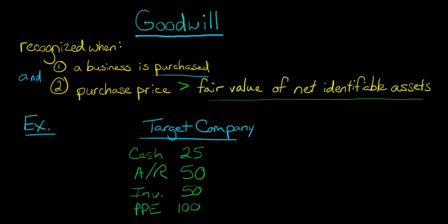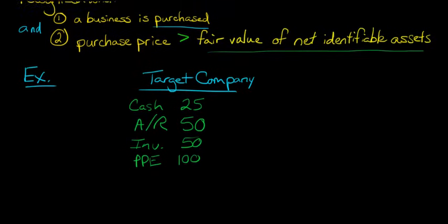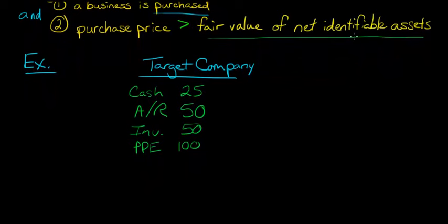Now these are all assets, but we need net identifiable assets. And these are all fair values. We're assuming this is all fair value. But we need to know the net. So what does that mean? Well, we're going to have to subtract out liabilities.